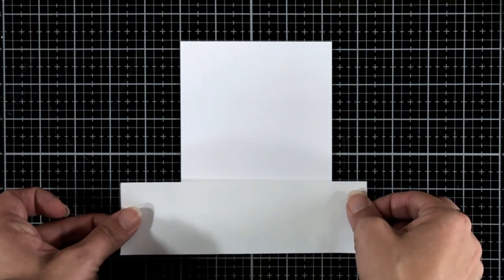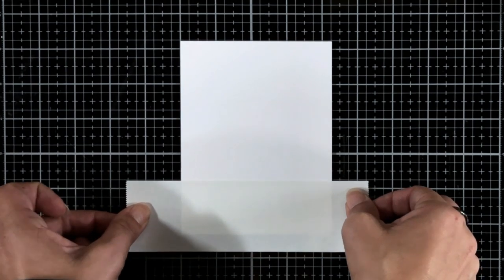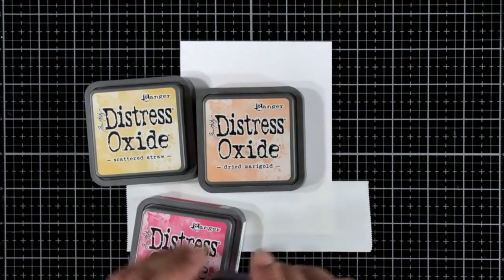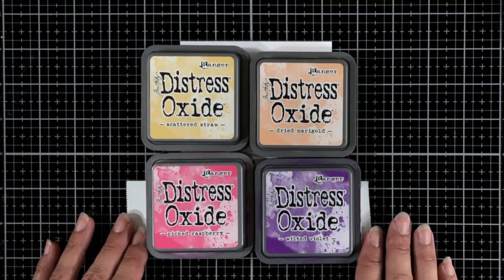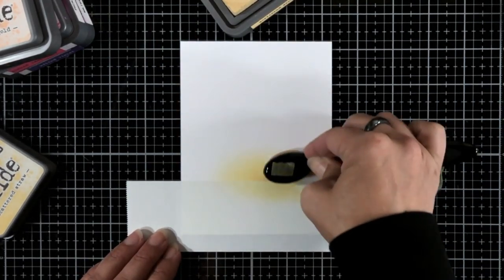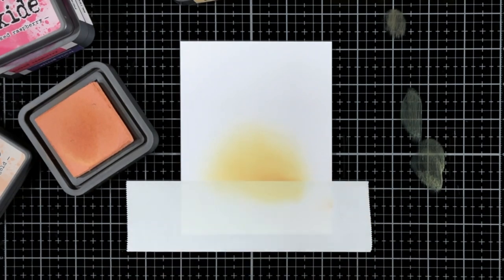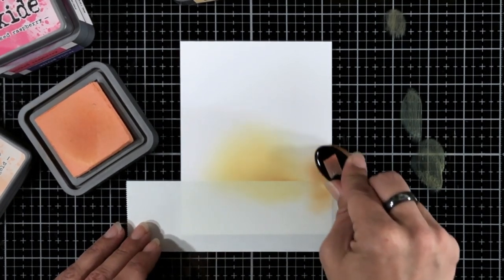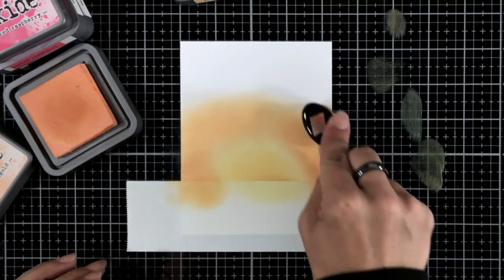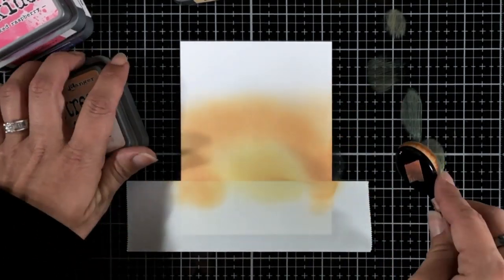Now once that's done, I am taking another piece of Neenah Solar White cardstock 80 pound. This is cut to four and a quarter by five and a half. And I'm masking off a portion of my card using the lines on my grid mat to line up that masking tape so it's really nice and straight. And I'm going to ink blend my sky. So I'm using scattered straw, dried marigold, picked raspberry, and wilted violet distress oxides. And I'm starting off with that scattered straw right in the middle, kind of where the sun would be if this were a sunset. And then I'm coming in with the dried marigold.